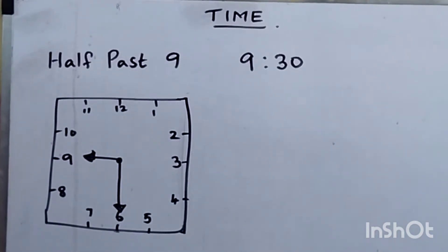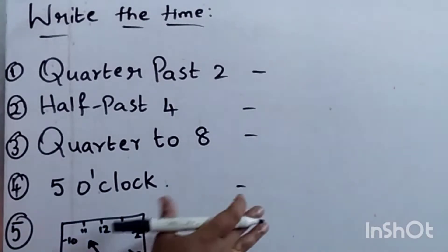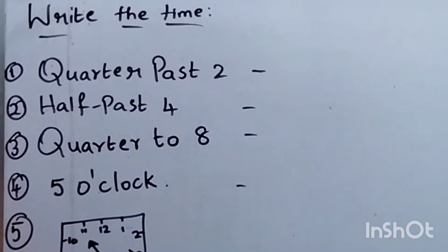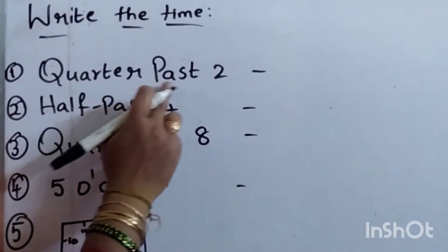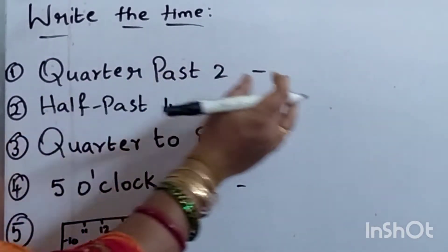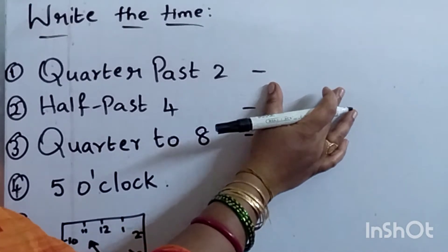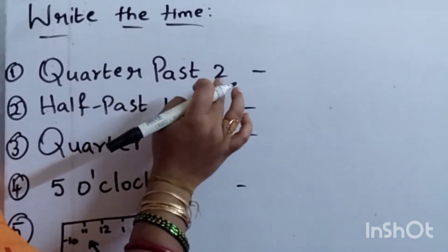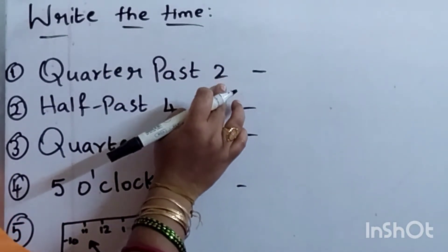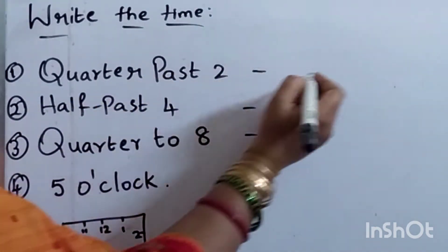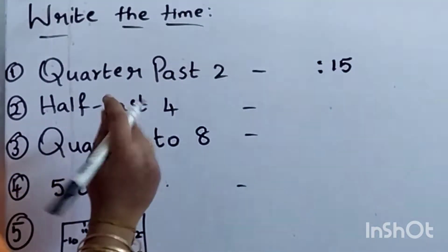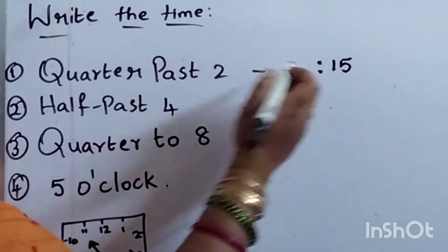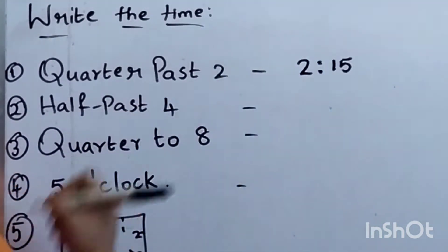Now let's see how to write the time in figures. Write the time for quarter past 2. Quarter past means 15 minutes, so write 15. The hour is 2. So the time is 2:15.